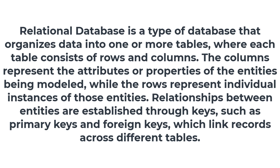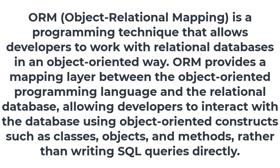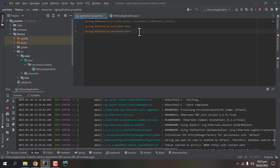In a relational database, the main components we have are database tables, and in a database table we have rows and columns. In object-oriented programming, everything we do is an object — we write a class and then make objects of that class. So there are two different things here: one is relational database and another one is object-oriented programming or Java.